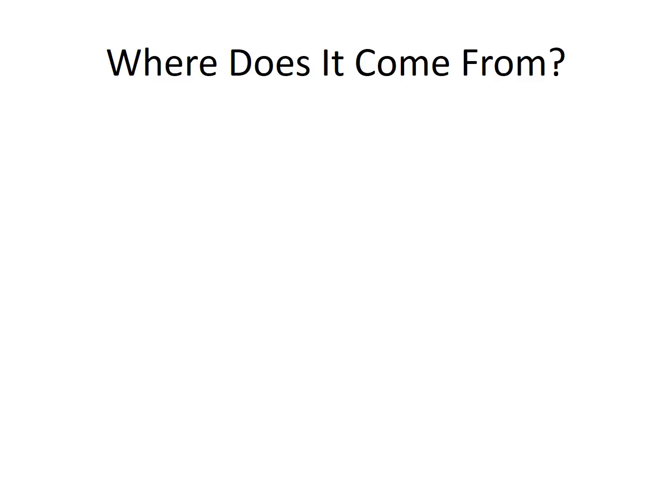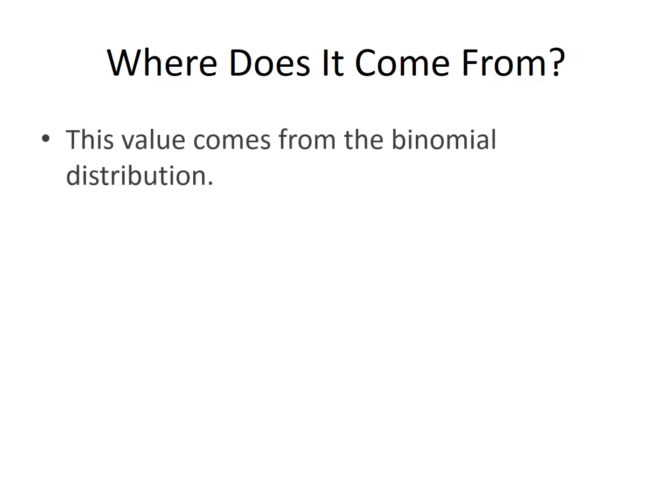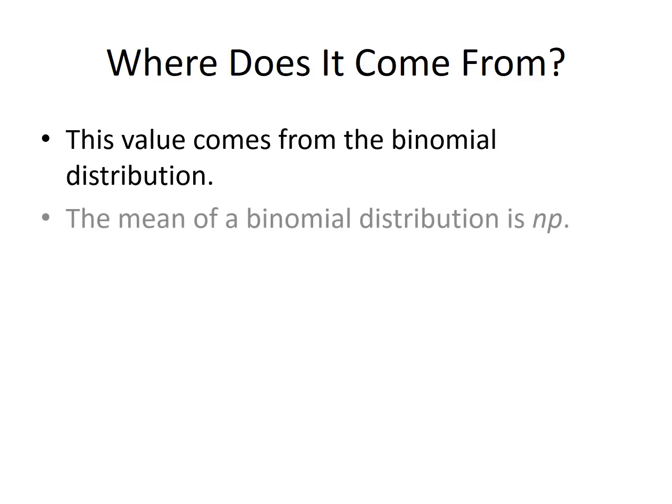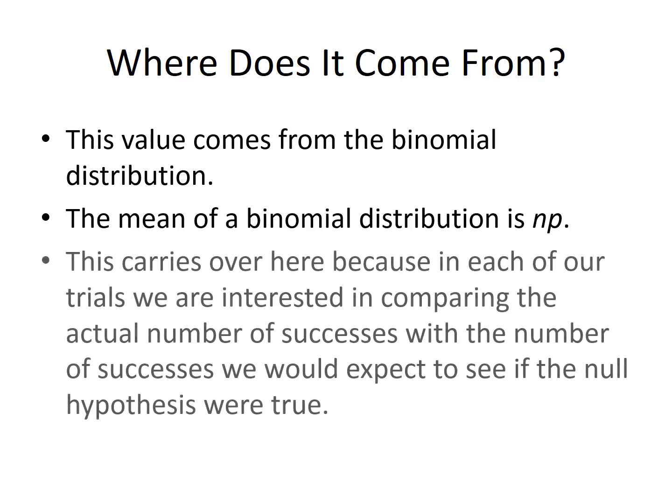Where does this value come from? It comes from the binomial distribution. The mean of a binomial distribution is n times p. This carries over here because in each of our trials we are interested in comparing the actual number of successes with the number of successes we would expect to see if the null hypothesis were actually true.